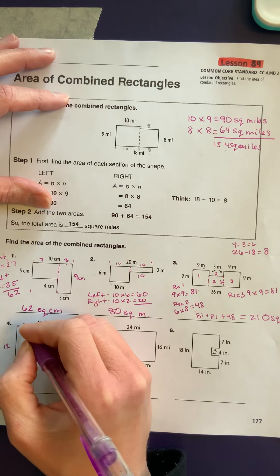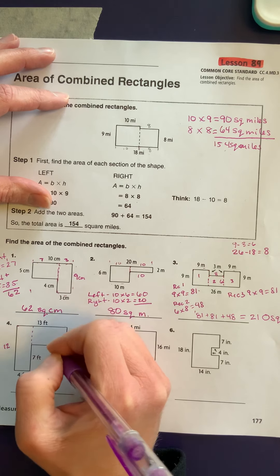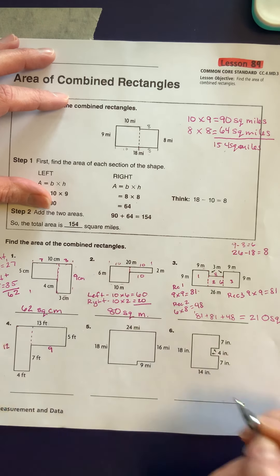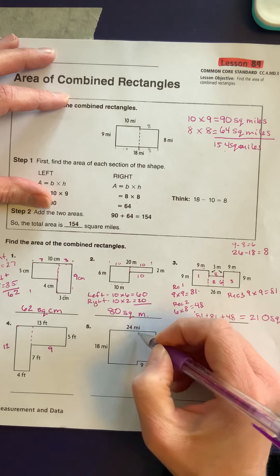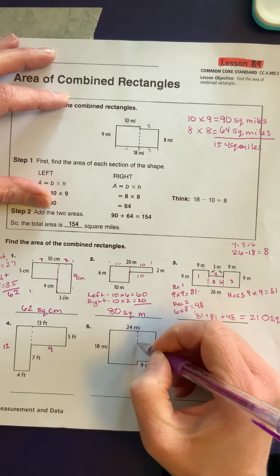So 13 minus the 4 feet here is going to give us the 9. That's there. We'll break this one apart here.